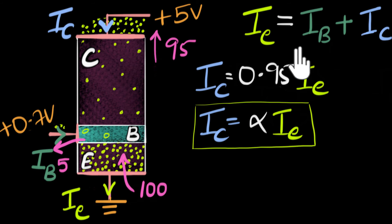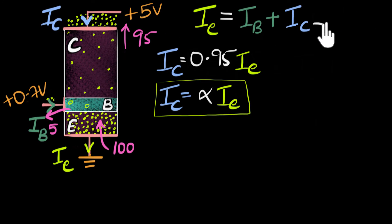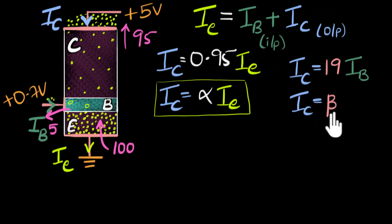Another connection that we would like to do is between the collector current and the base current. And the reason for that, the collector current is usually the output, because that's the amplified current. So this is usually the output in any application. And this base current is usually the input. So we'd also like to have a connection between these two. And we can see that connection again from these numbers. In our example, we could see that IC is equal to, well, how many times more compared to IB? Well, IC is 95, IB is 5, so 95 divided by 5 is 19. So we see that IC is 19 times more than IB. And in general, this number is called beta. So usually, you would see people writing it as IC equals beta times IB.